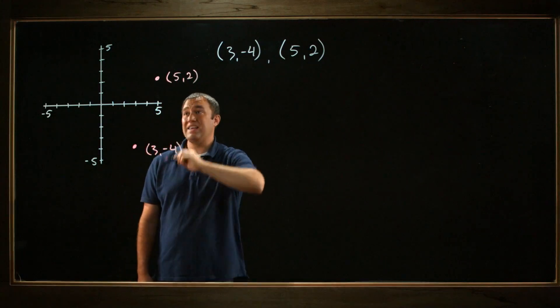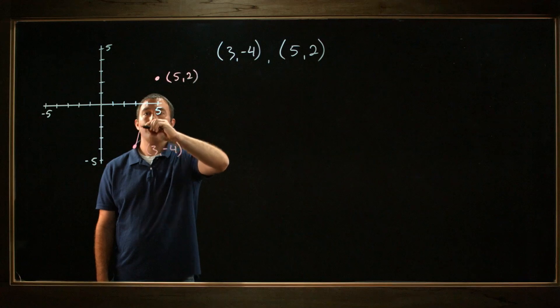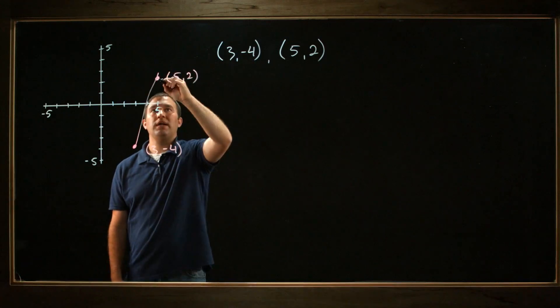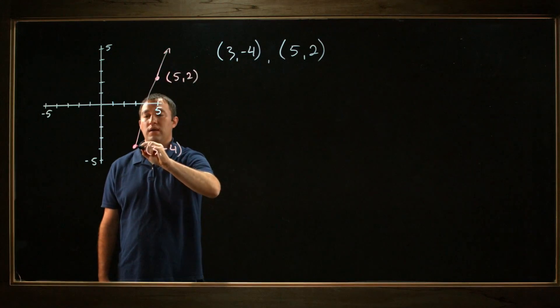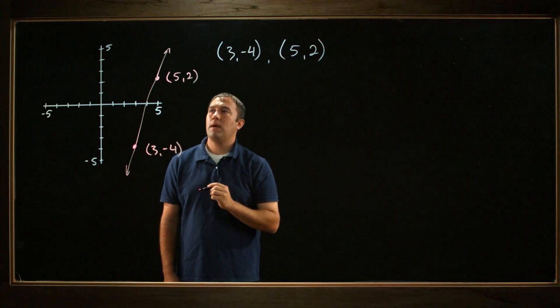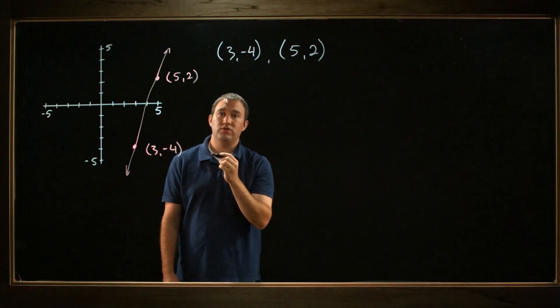Now there's a straight line that connects the two, and it would keep on going forever that way and forever that way. Now I want to find the slope of this straight line.